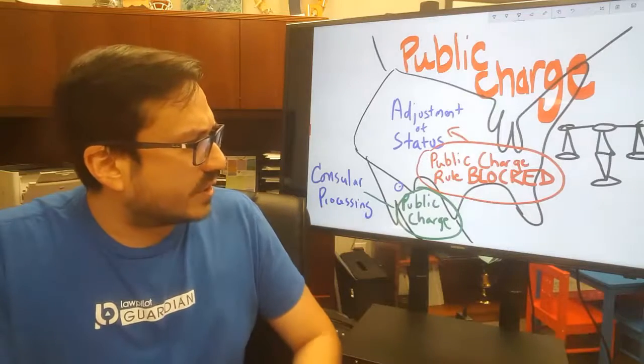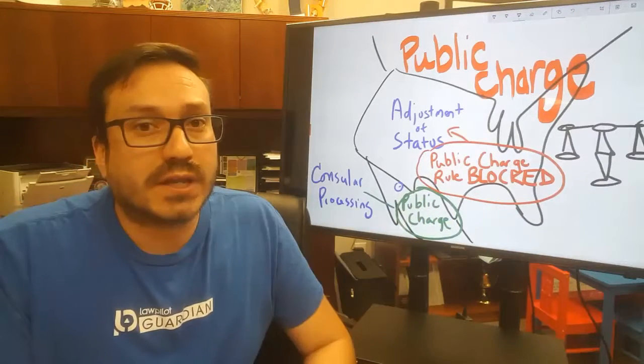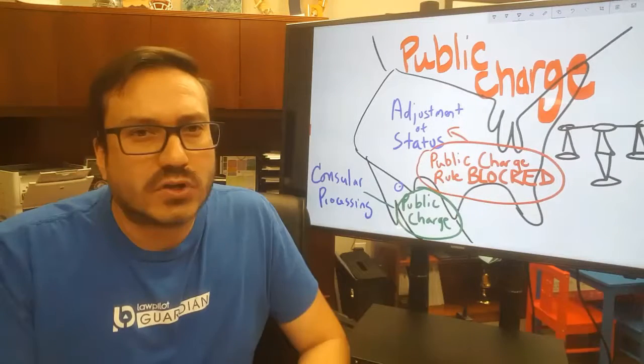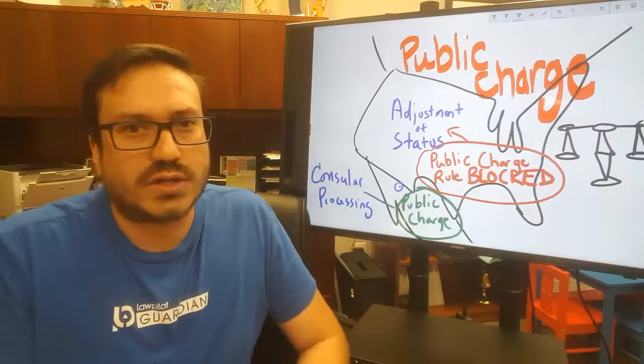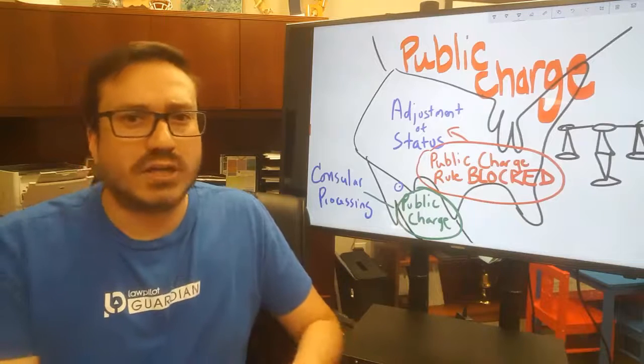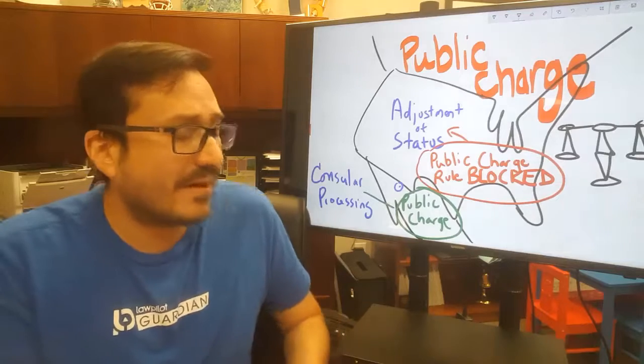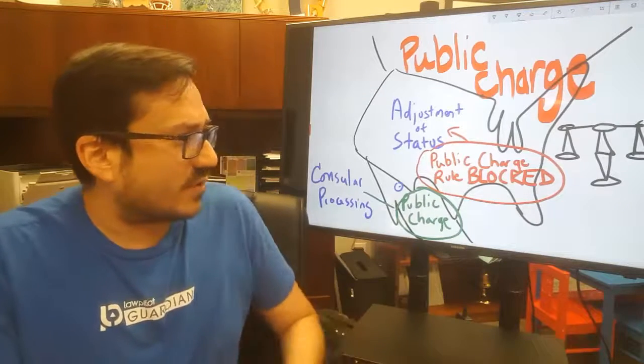If you recall, under the public charge rule, an applicant had to demonstrate that they are not a public charge under a rather difficult standard, which involved a bunch of factors, such as age, medical conditions, whether the person had received public assistance in the past. Those are the factors that were supposed to be considered.